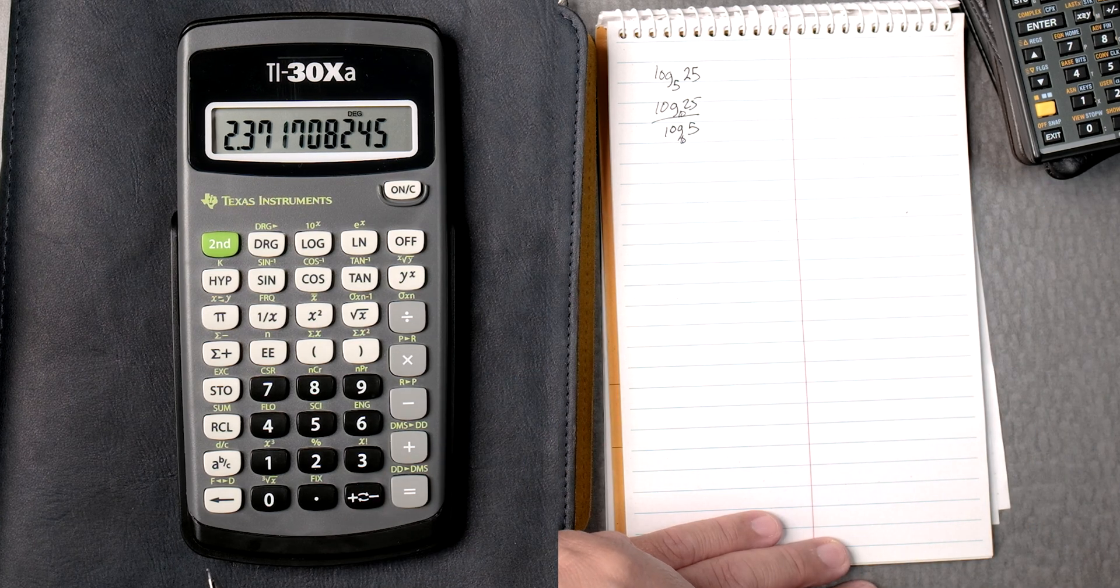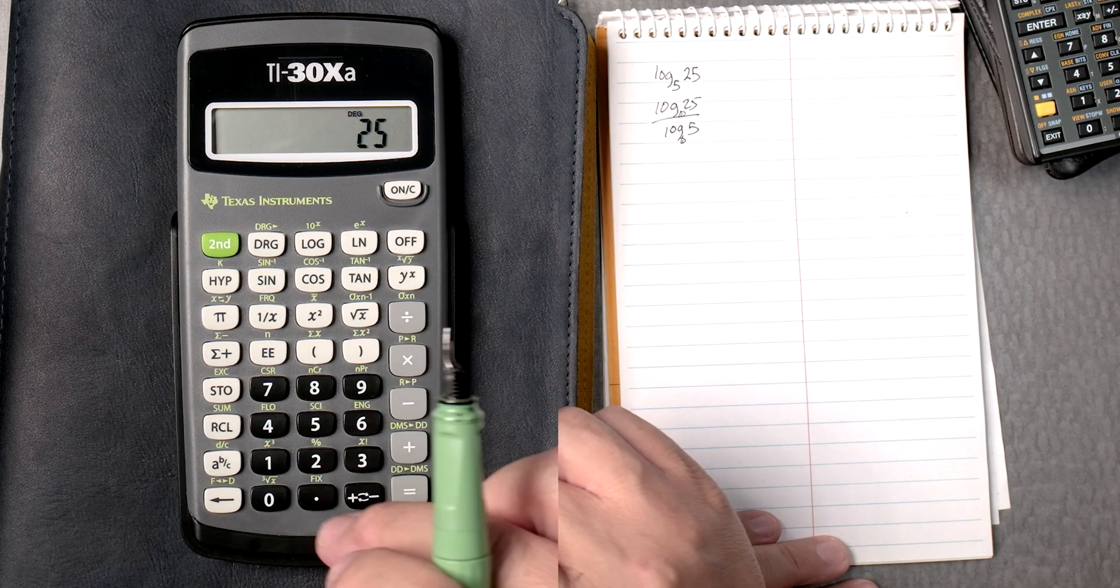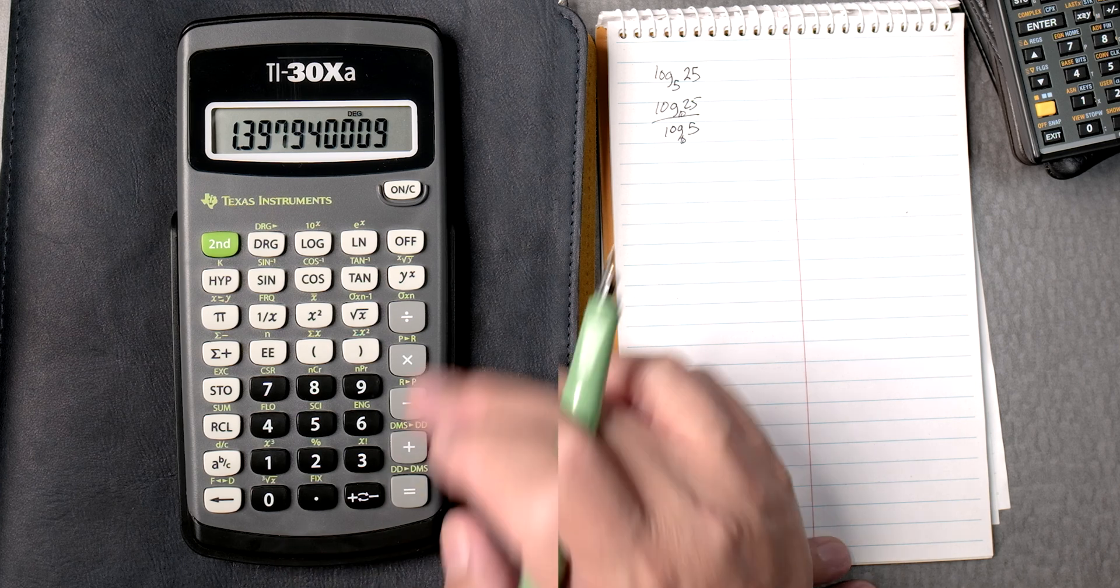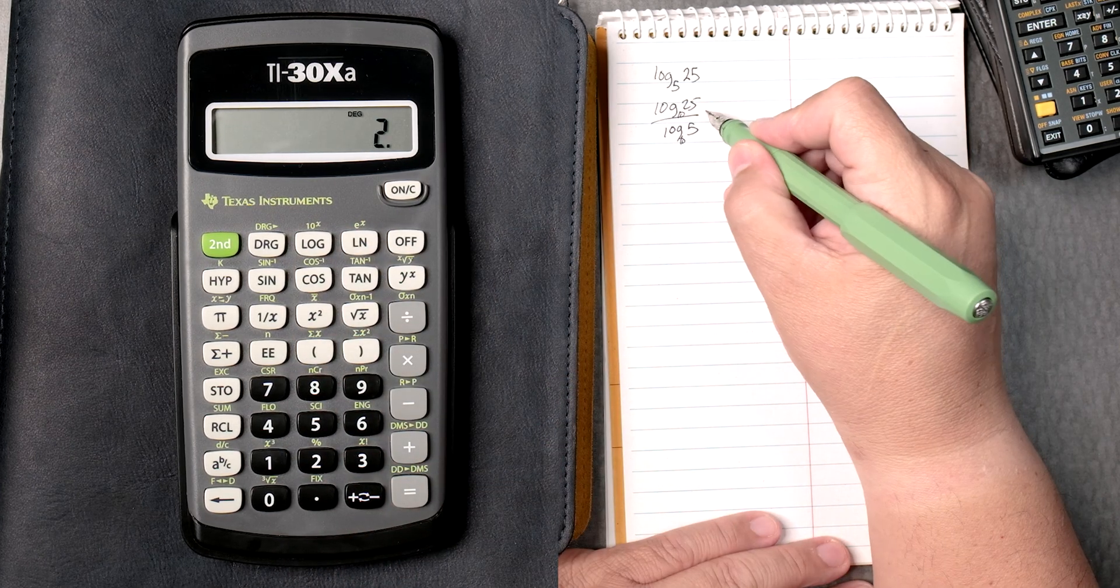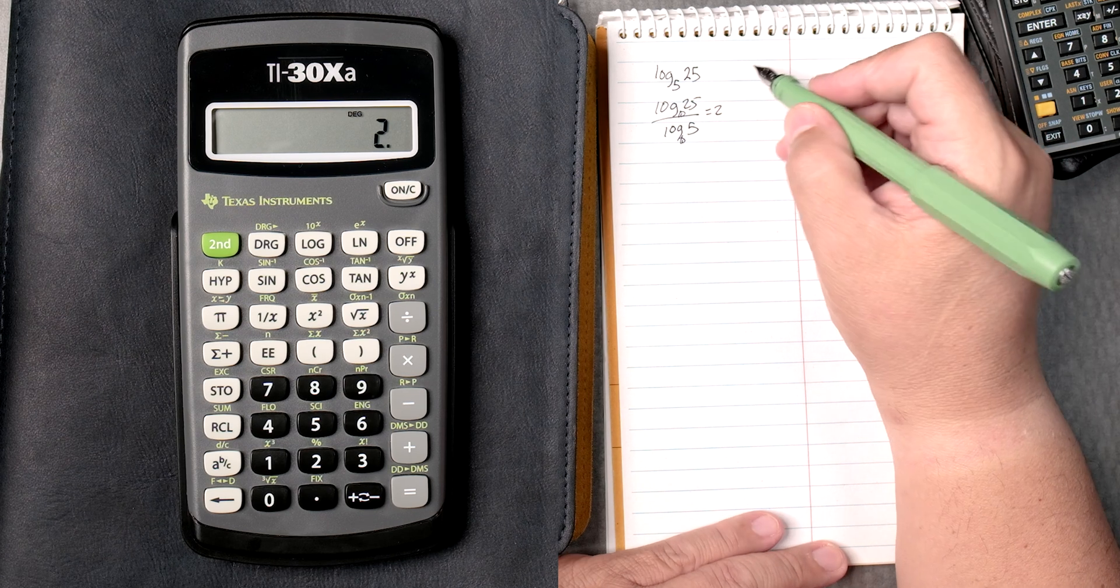So let's do the following. Let's do 25 log divided by 5 log, you press equals, gives you 2, perfect.